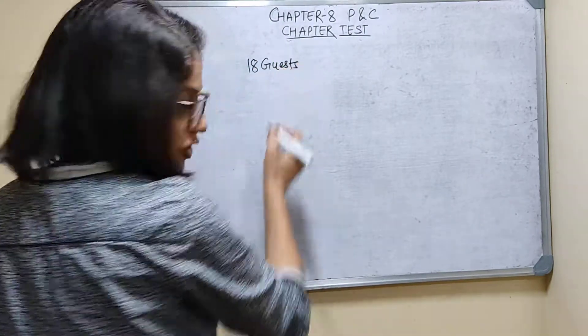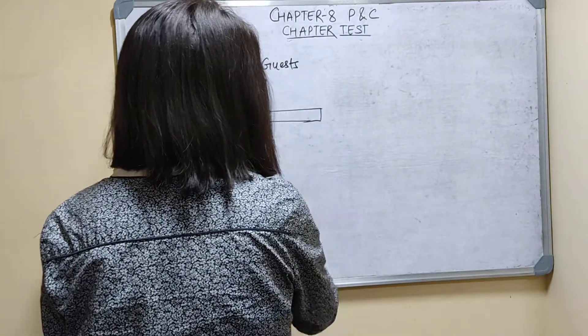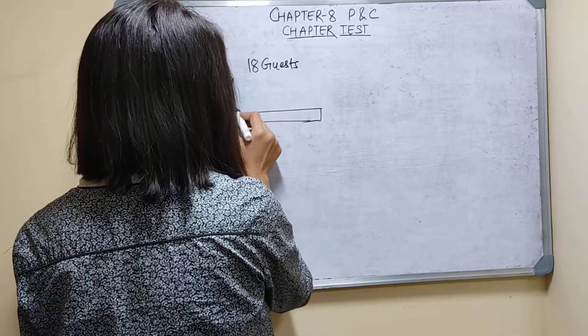18 guests have to be seated half on each side of the long table. Half, so 9 guests will be on this side.